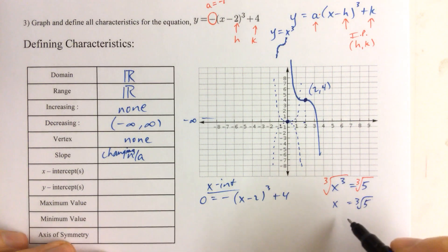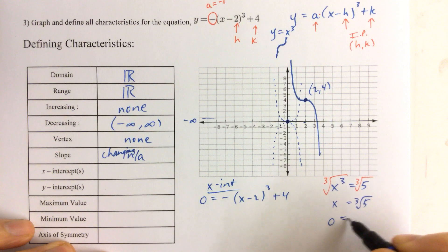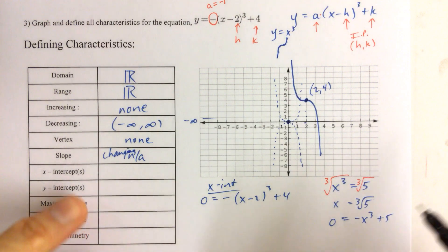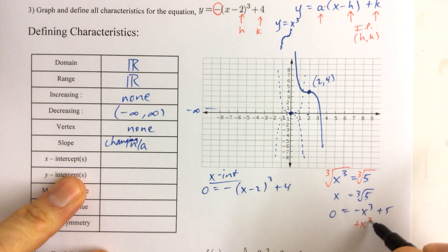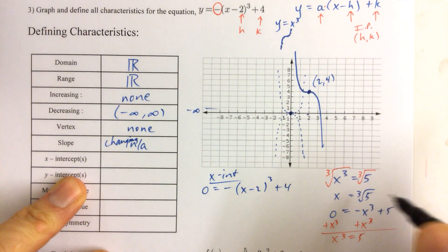Now if we were to have an equation like this, zero equals negative x cubed plus 5, then we would add x cubed to both sides. So if we were to add x cubed to both sides in this case, x cubed equals 5, and then we would proceed like we did.